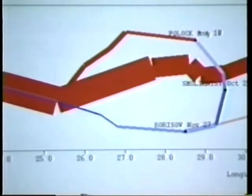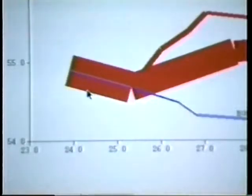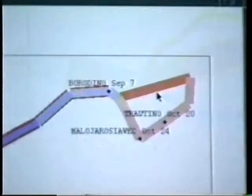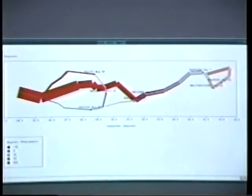Each march segment is represented by a line whose thickness represents the number of troops still in the army and whose color indicates the temperature. The army was reduced from 440,000 down to 100,000 by the time they got to Moscow, and down to 10,000 by the end of the retreat. Temperatures were over 95 degrees during the advance, indicated by the red lines, and below zero during the retreat, indicated by the blue.